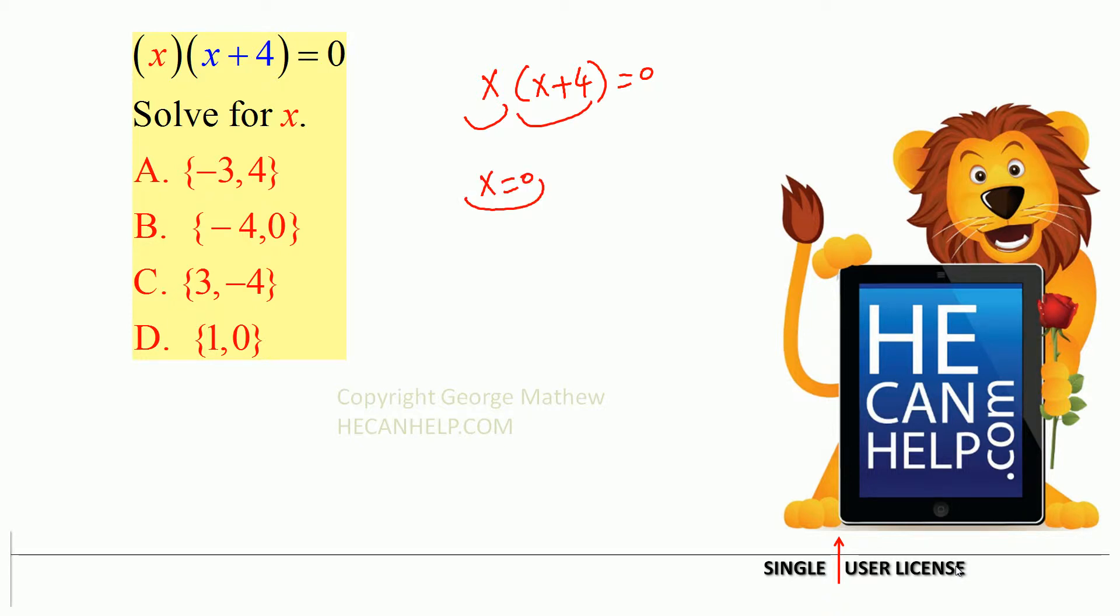So one of the possible solutions is x is equal to 0. If you put x plus 4 is equal to 0, subtract 4 from both sides and what do we get? x is equal to negative 4.